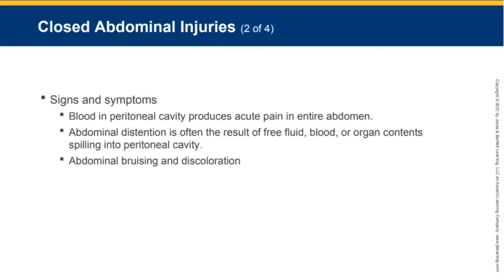Signs and symptoms are your bread and butter as EMS providers. All the background knowledge of anatomy and physiology is important, but in the field you're going to see signs and be told symptoms. Once you look at the mechanism of injury, you should have an idea of what you should be seeing and what they should be telling you. For closed abdominal injuries, blood in the peritoneal cavity produces acute pain throughout the entire abdomen. Solid organs are very vascular, so once injured, blood spills into the peritoneal cavity.